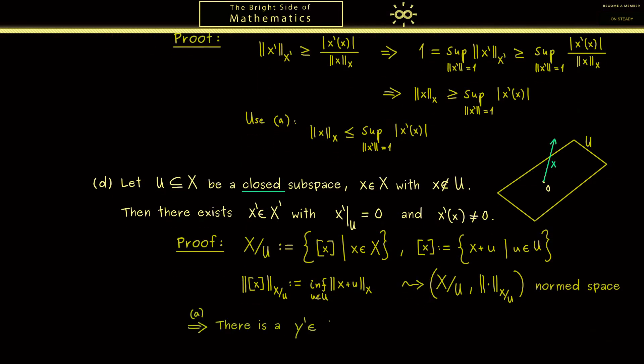This means that there is a linear functional in the dual space of X/U and let's call it y'. And the only thing we need here is if you put in the equivalence class of x you don't get out zero. So here we use that x is not in U so the equivalence class is not the zero vector.